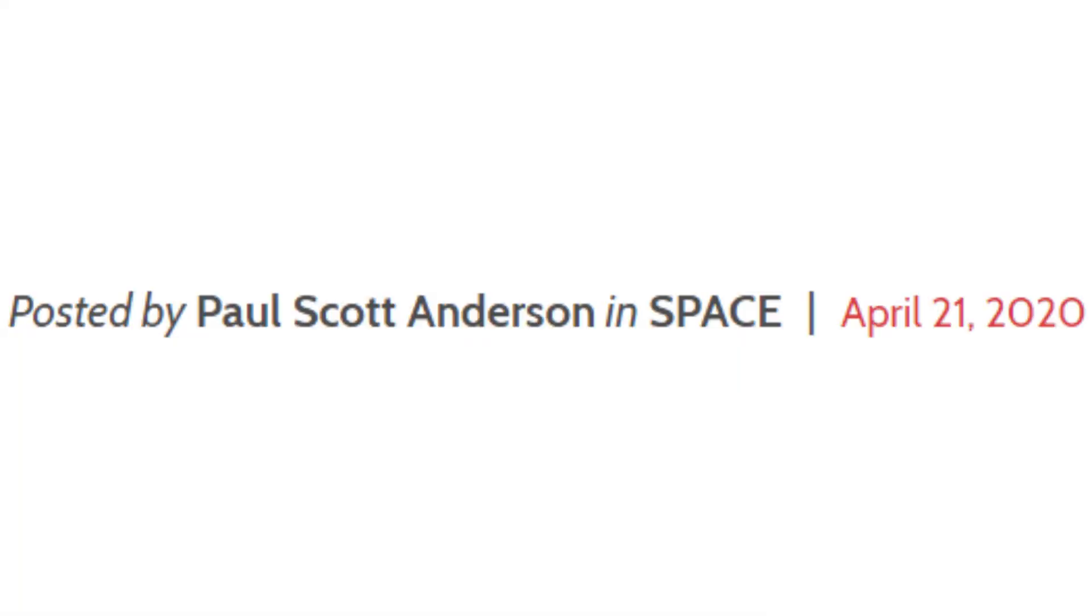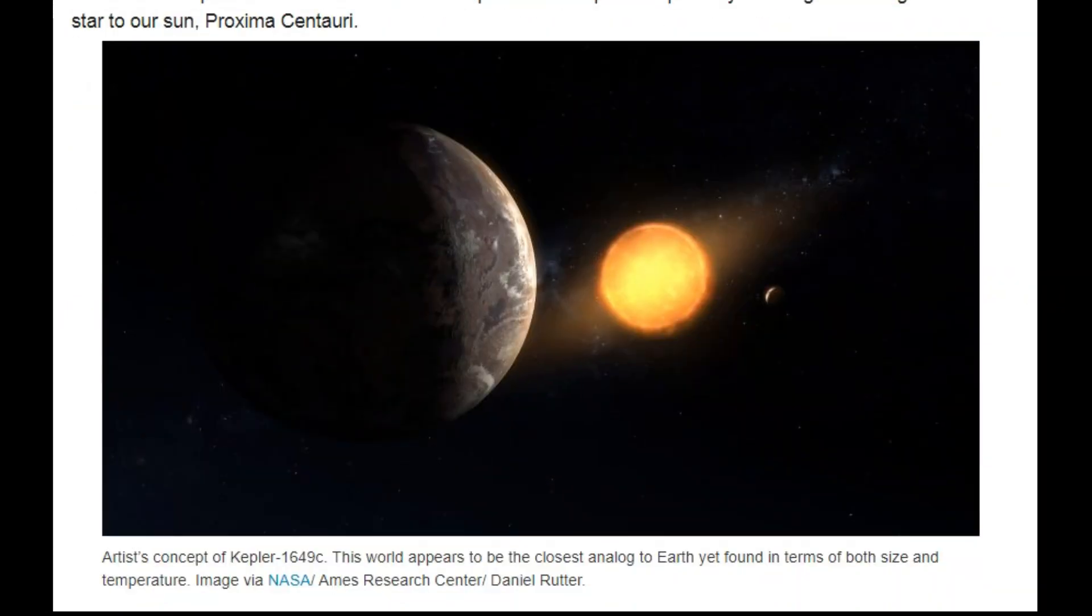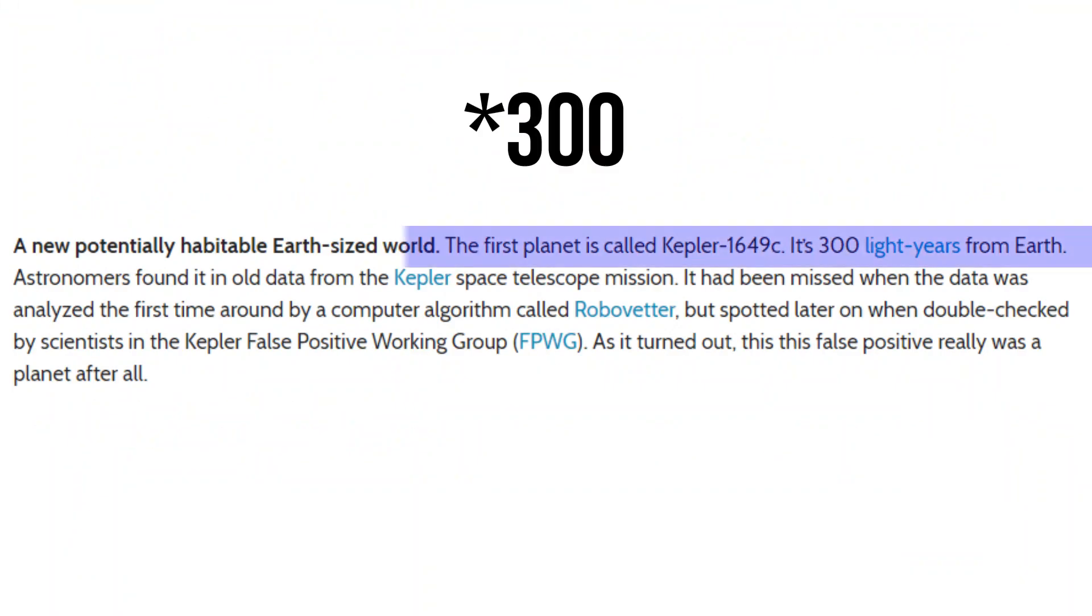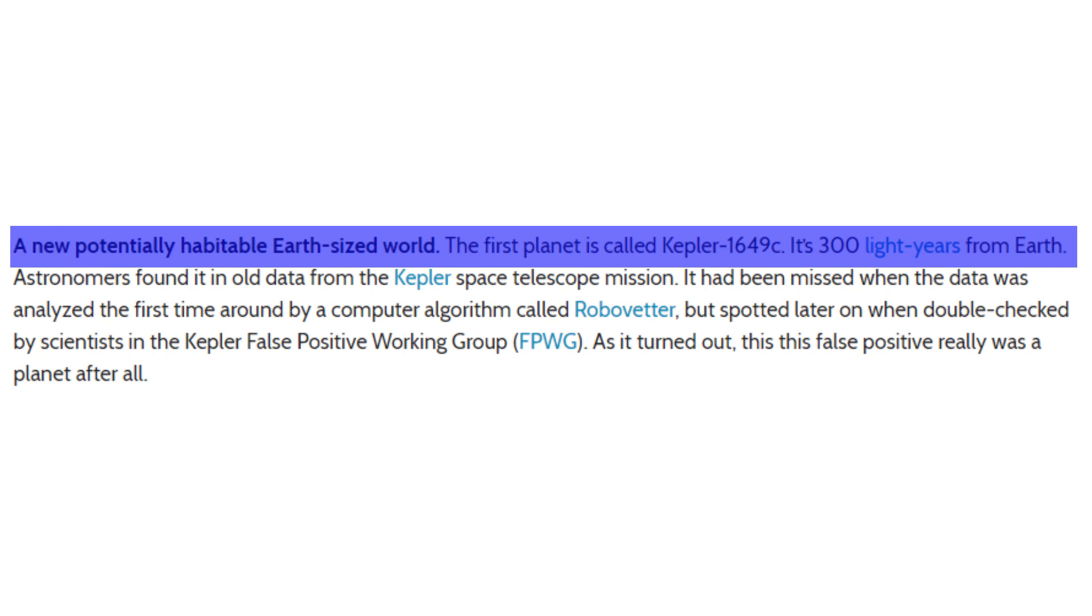A recent article by astronomer Paul Scott of Earth Sky wrote about an exoplanet, namely Kepler 1649, around 3000 light-years away from Earth, might be potentially habitable Earth-sized world.